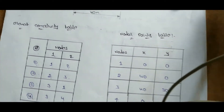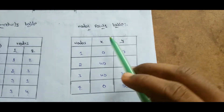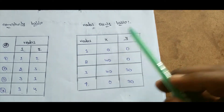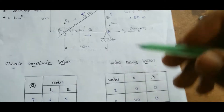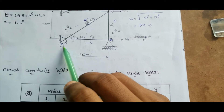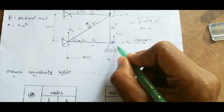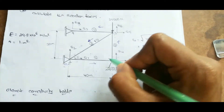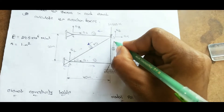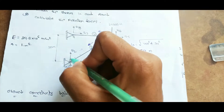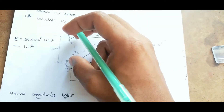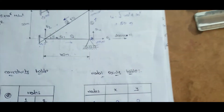The next step is the nodal point table. Here you indicate nodes and their X and Y coordinate values. From the diagram, consider node 1 as the origin at (0, 0). Node 2 is at x = 40, y = 0, so coordinates are (40, 0). Node 3 has x = 40 and y = 30, so coordinates are (40, 30). Node 4 has x = 0, y = 30, so coordinates are (0, 30).